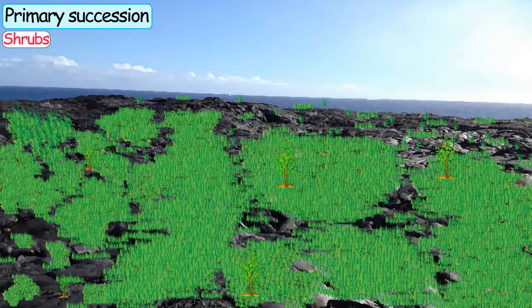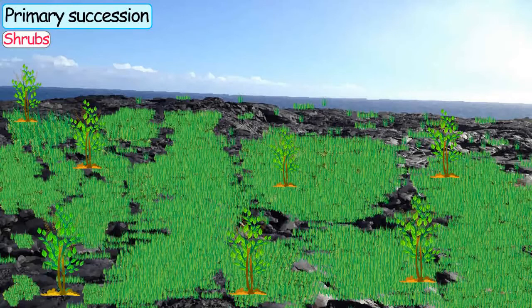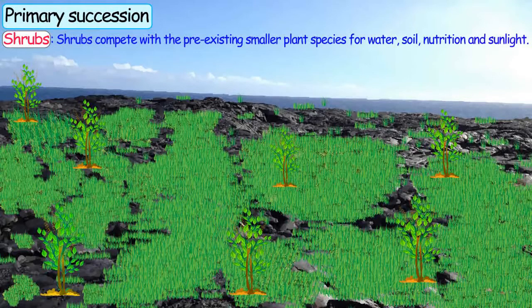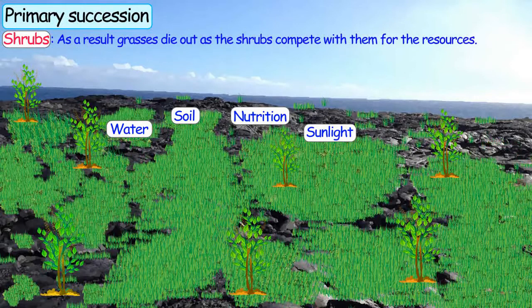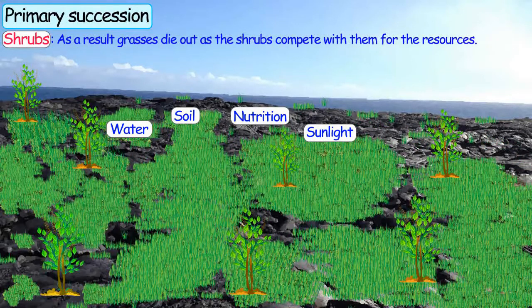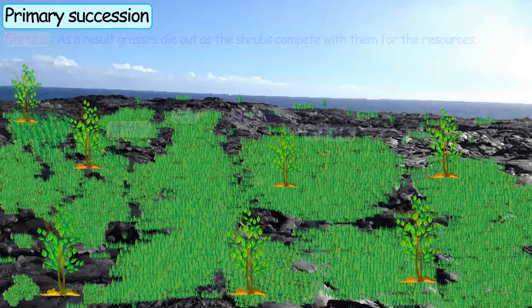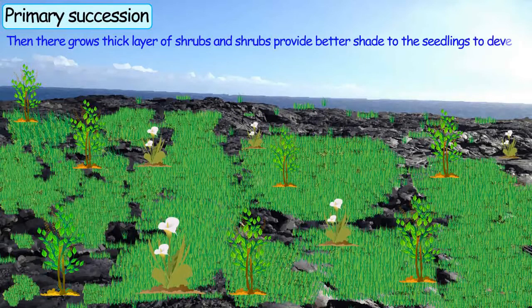Like taller shrubs. These taller shrubs compete with smaller grasses for all types of resources like water, soil, nutrition, and sunlight. And the grasses die out because shrubs compete with them for resources. Then there grows a thicker layer of shrubs.